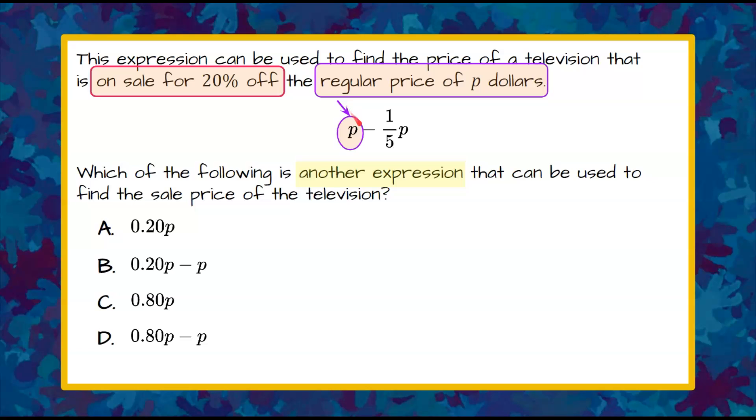So in our expression, P represents the regular price of the television. Notice we're subtracting something. That represents our discount.